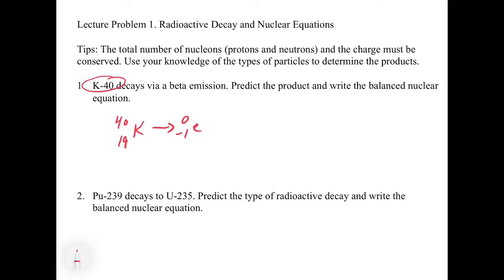Now to balance it out, because the number of nucleons, protons and neutrons, and the charge must be conserved, we're going to use that to our advantage in terms of figuring out what the product should be. If on the left we have a total mass number of 40 and we have no mass in the electron, then our product has got to have 40 nucleons.